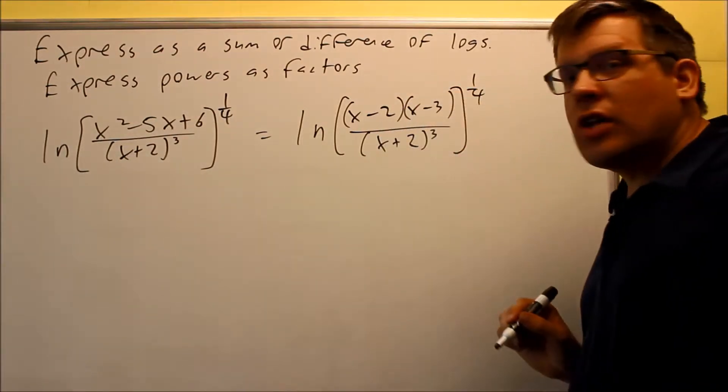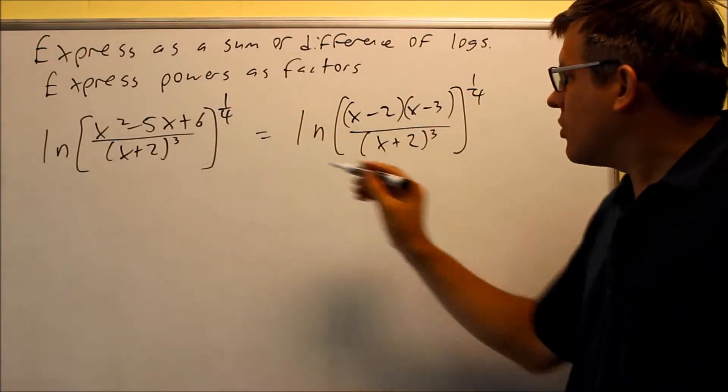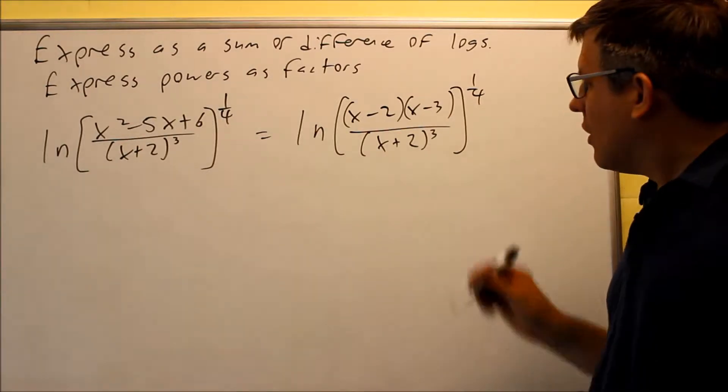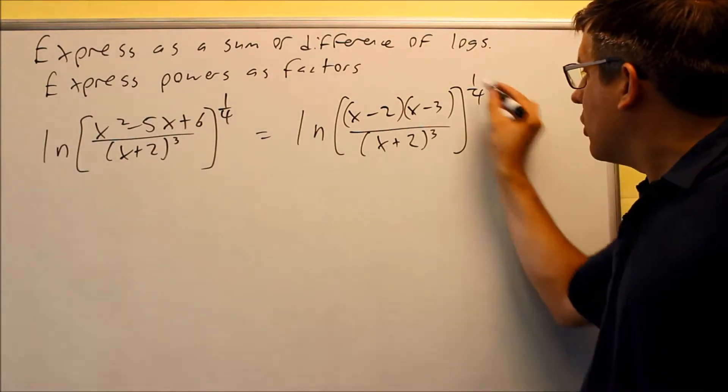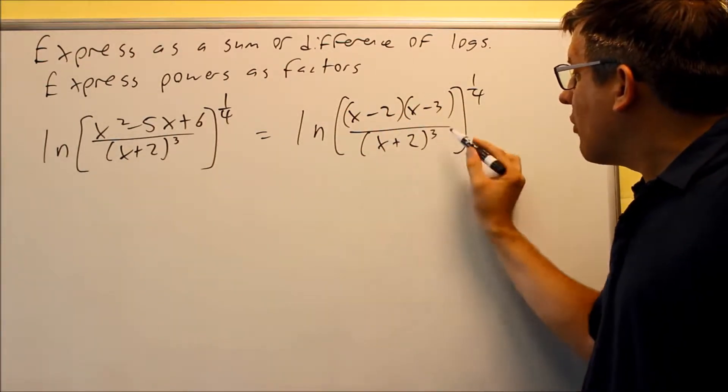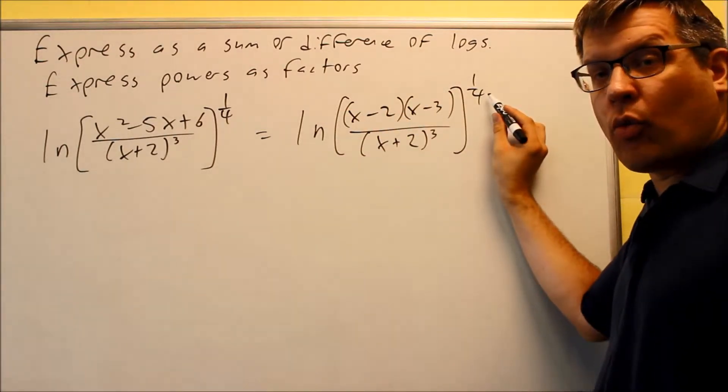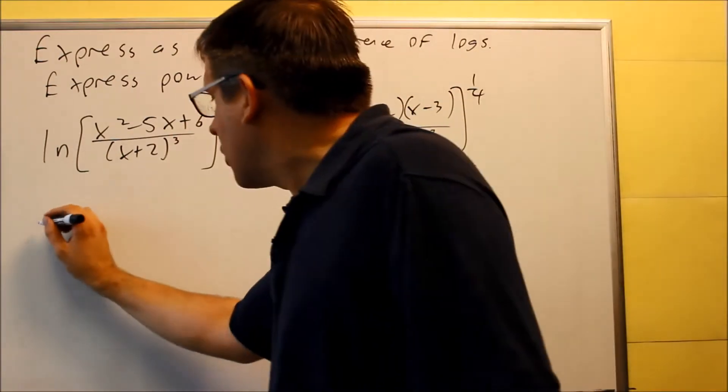so I'm going to do negative two, negative three. That multiplies to make positive six, but adds to be negative five. Now that I have this, this is where it's going to be a little bit different from the written notes. Instead of bringing the one-fourth down, I'm actually going to raise everything inside to the power of one-fourth.